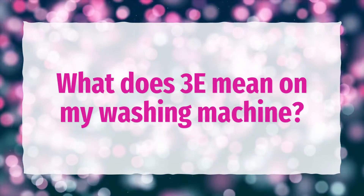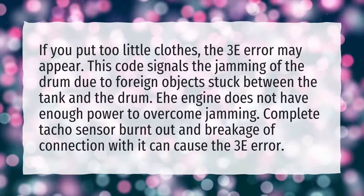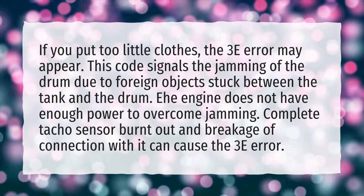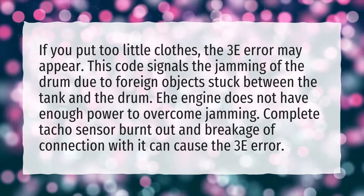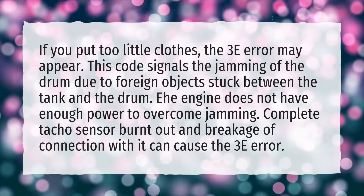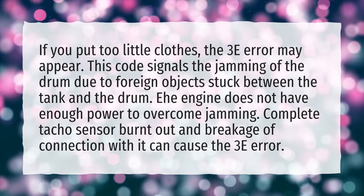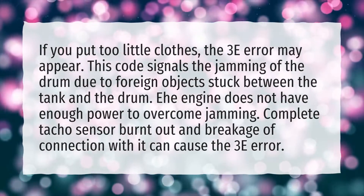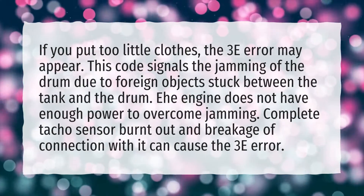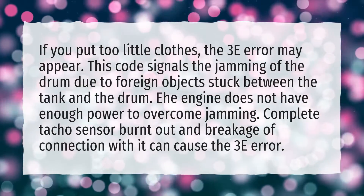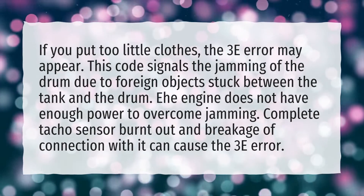What does 3E mean on my washing machine? If you put too little clothes, the 3E error may appear. This code signals the jamming of the drum due to foreign objects stuck between the tank and the drum. The engine does not have enough power to overcome the jamming. A burnt out Tacho sensor or breakage of connection with it can also cause the 3E error.